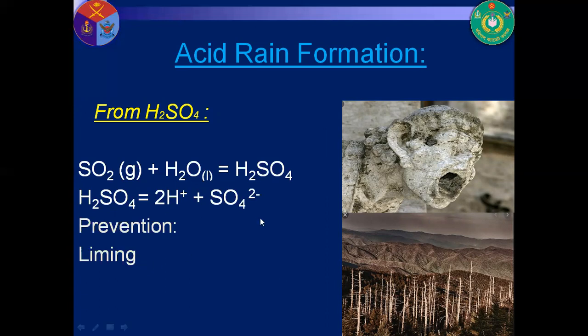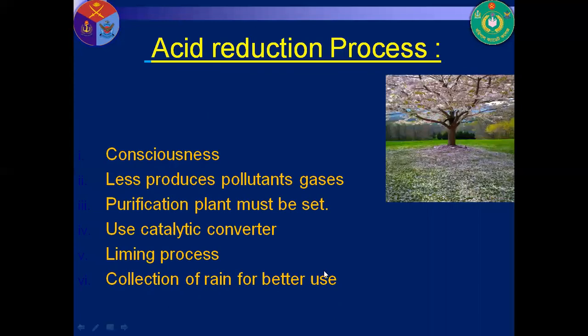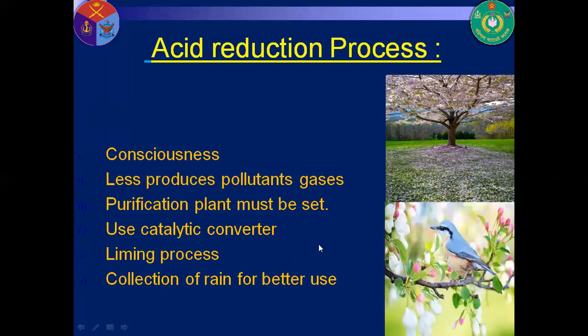We need to prevent acid rain by using liming and EGD plants. We need to be conscious about the production of different gases which produce acid rain, and reduce their production. We must use purification plants which purify the gases and convert them to inactive forms, use catalytic converters, the liming process, and collection of rain for better use. These are the ways we can prevent acid rain. If we prevent it, our nature will be green and beautiful.